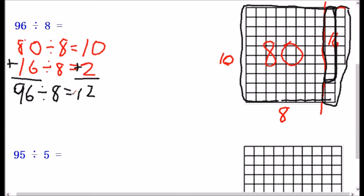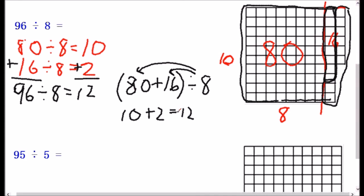Let's look at how we would write this out in a better way. So we started off with 96 divided by 8, and we realized that 96 is really just 80 plus 16. And we took that and we divided it by 8. We're basically distributing that division how we did in the picture. 80 divided by 8 is 10. 16 divided by 8 is 2. And so we get our total of 12.